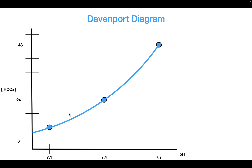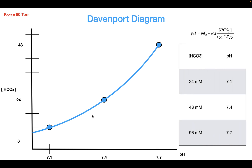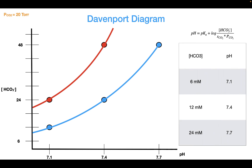Now what if we were to increase the partial pressure of CO2? If we were to increase it to maybe 80 Torr and plug the different values into the Henderson-Hasselbalch equation, we would get the following curve. What we see is that when we increase the partial pressure of CO2, this causes the curve to move upwards. And if we were to decrease the CO2, this would cause the curve to move downwards.